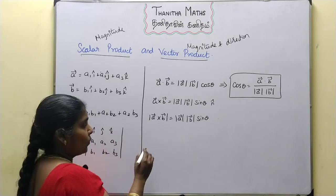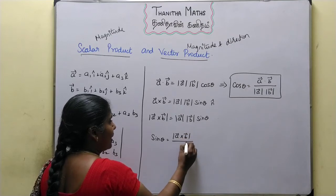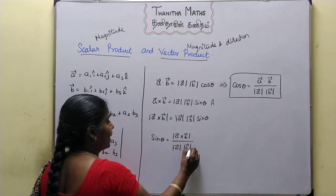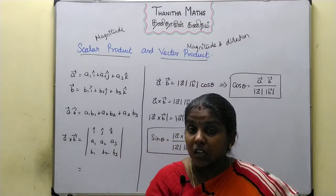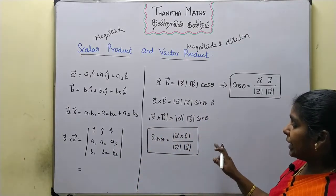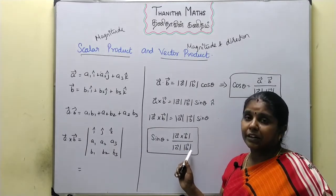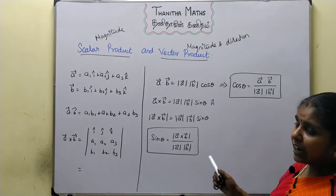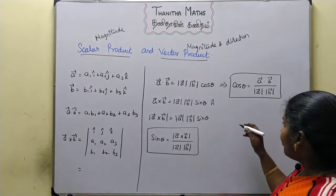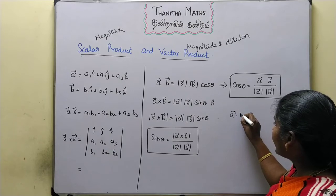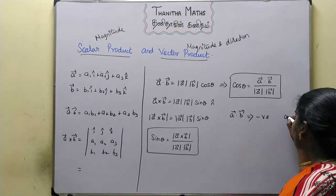Sin theta equals the modulus of A vector cross B vector divided by the modulus of A vector times the modulus of B vector — this is the angle between two vectors. However, when using the sin theta formula, we need to use the acute angle — the first quadrant angle with all modulus values positive. That is why we usually prefer the cos theta formula for finding the angle between two vectors.